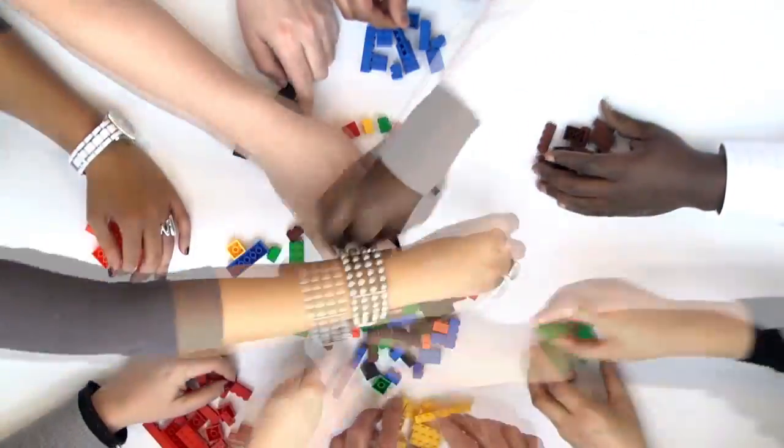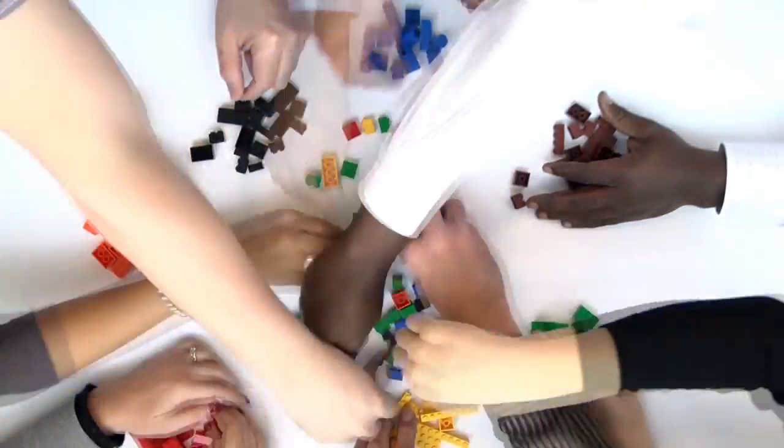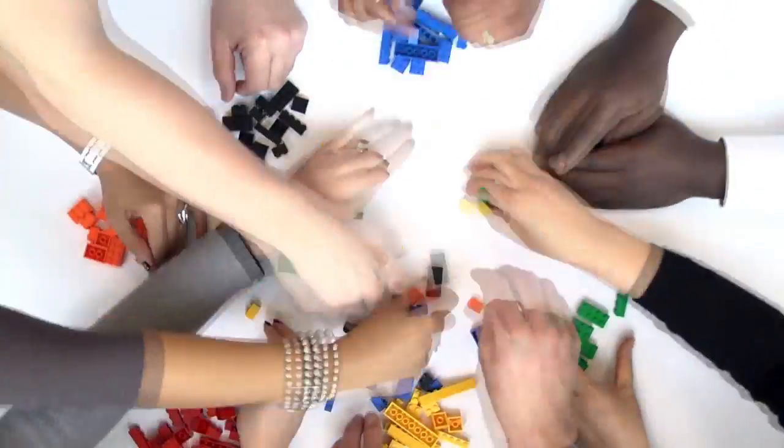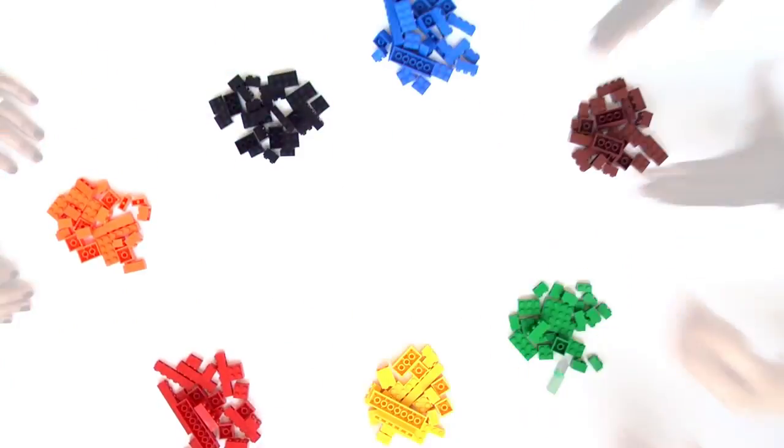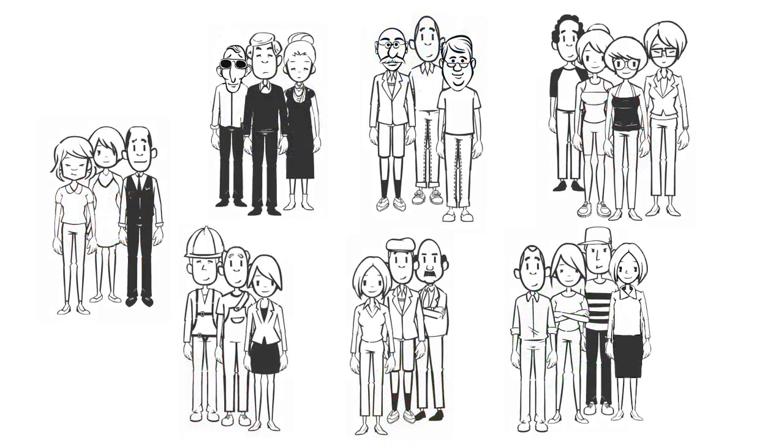At first glance, you might think these blocks are all different. But as you can see, we can group them by similar characteristics such as color. We can also see that within a group of the same color, the shapes are different. The same can be said about people.